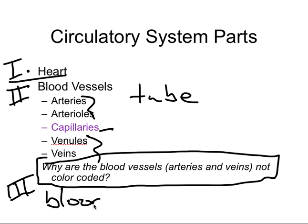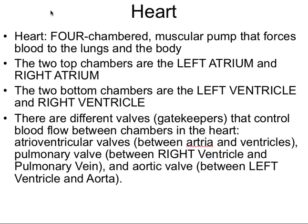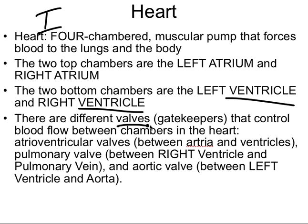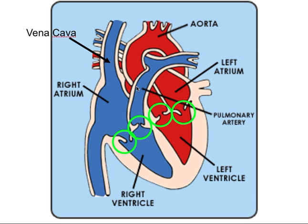Starting with the heart: it has four chambers, it's a muscular pump, and it forces blood around the body. The top parts are called the atriums — right and left — and the bottom chambers are called ventricles. There are also lots of different valves. Anytime blood comes into or out of the heart, there's a valve, and these valves control the flow of blood.